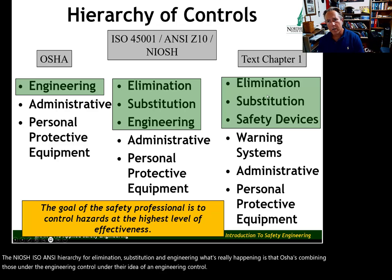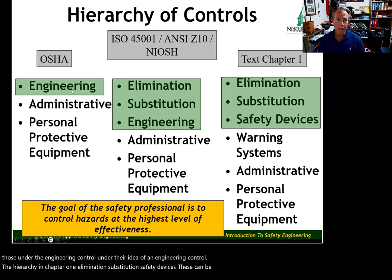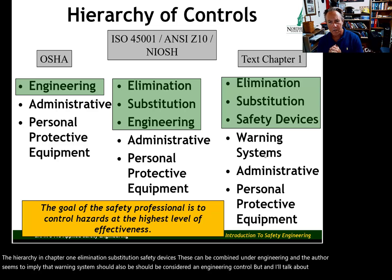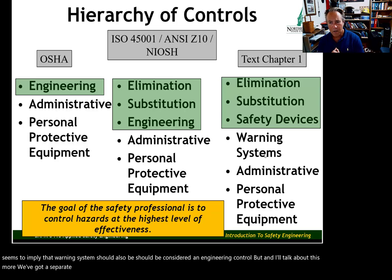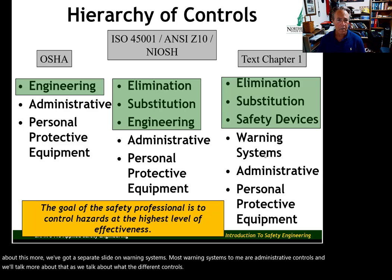The hierarchy in chapter one covers elimination, substitution, and safety devices, which can all be combined under engineering. The author implies warning systems should also be considered an engineering control. But most warning systems, to me, are administrative controls — and we'll talk more about that as we go.